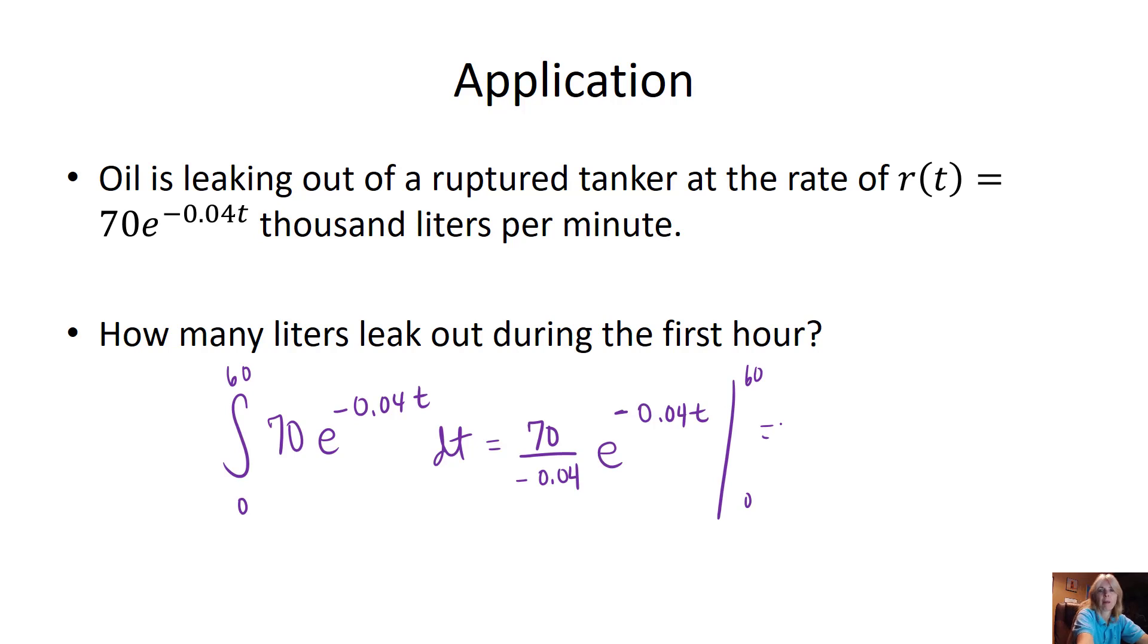If you put 70 divided by negative 0.04 in your calculator, you actually get negative 1750, and I'm just going to put that on the outside. So my f of b is going to be e to the negative 0.04 times 60 minus my f of a. Please do not lose that because that is going to be a number - that's going to be 1 there. And I plug all this into my calculator and I get 1591.24. And this is in liters because remember, we're finding an actual amount.